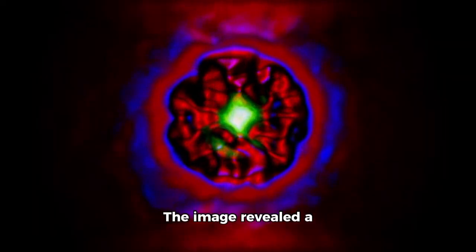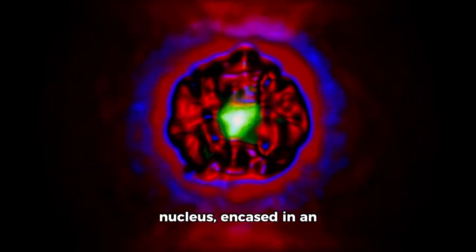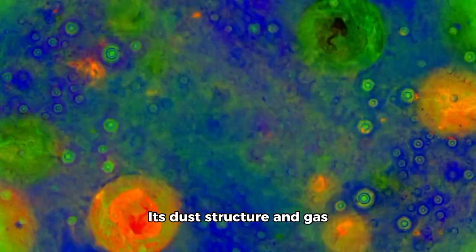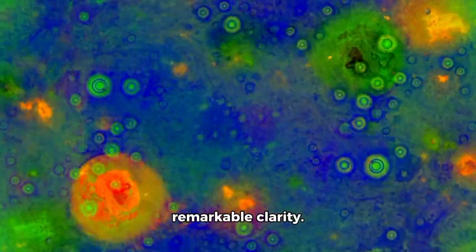The image revealed a sharper-than-ever nucleus, encased in an asymmetrical coma glowing with thermal emissions. Its dust structure and gas plumes were mapped with remarkable clarity.